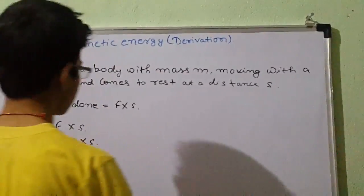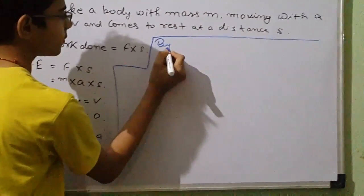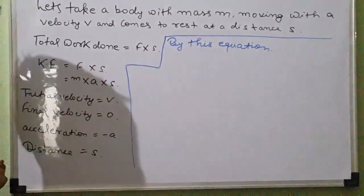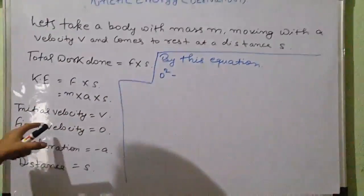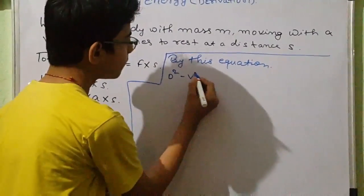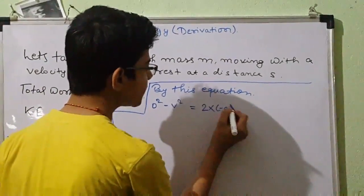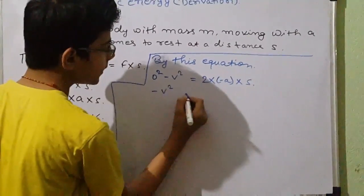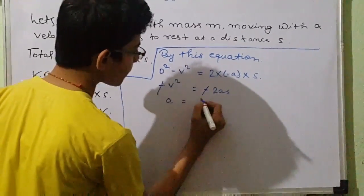Let's see by this equation: square of final velocity minus square of initial velocity equals twice the acceleration into distance. So here, zero minus v squared equals minus 2as. Minus and minus cancel, so a equals v squared by 2s.